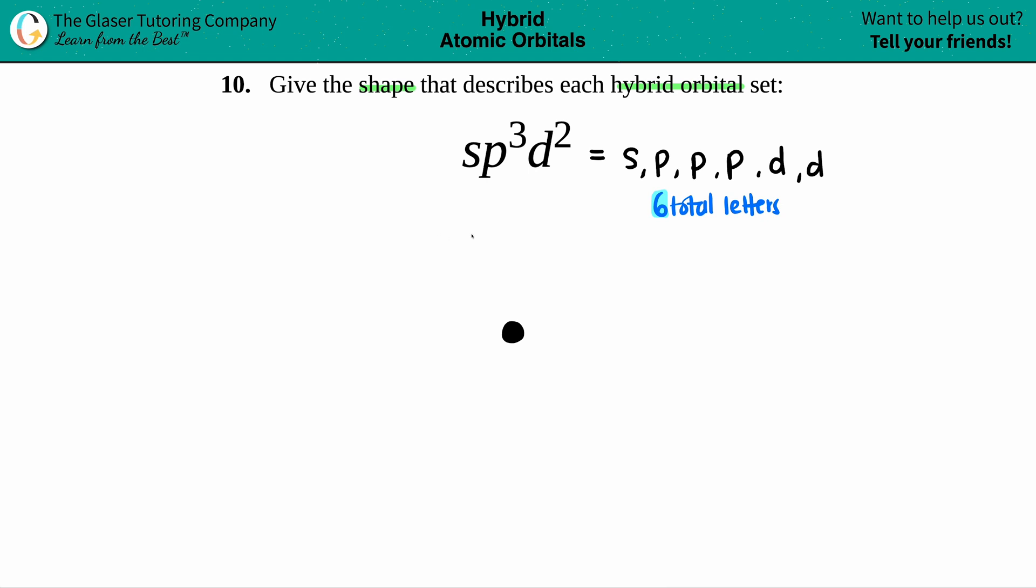But basically, this is situated around a circle. That's better. So we try to draw what six orbitals would look like, right? So six total letters, that means six orbitals, six hybrid orbitals.